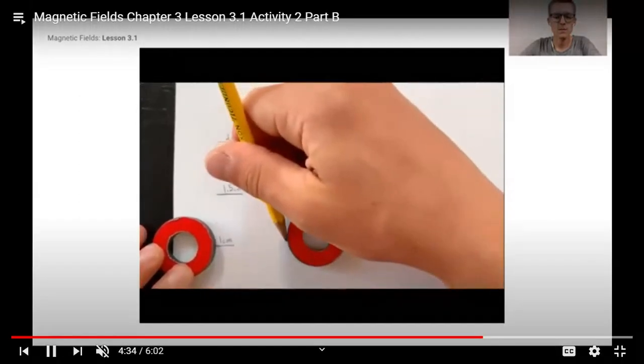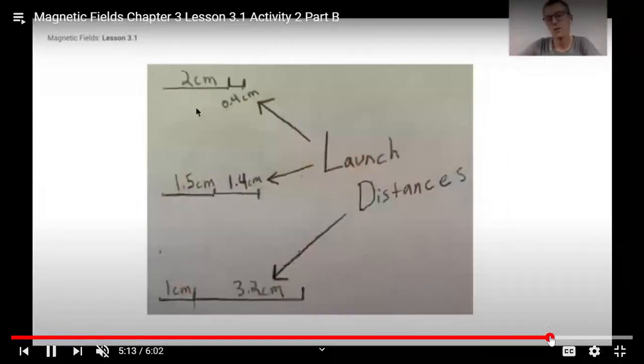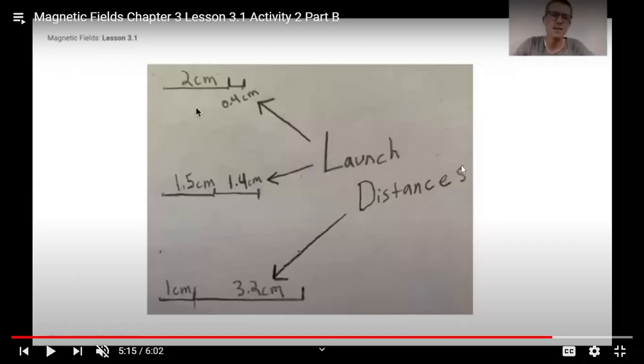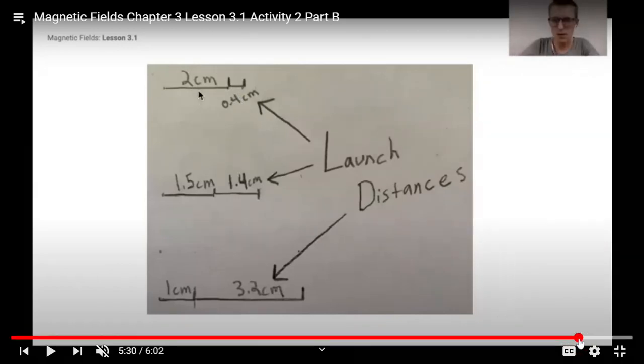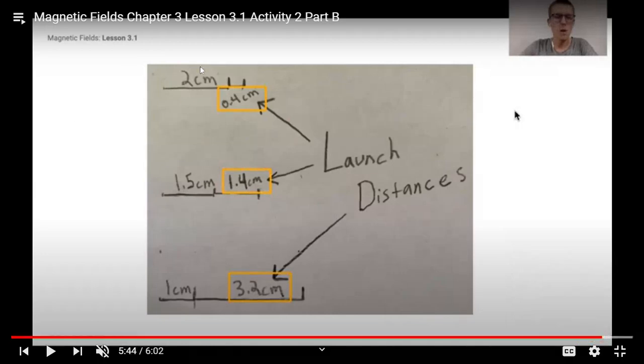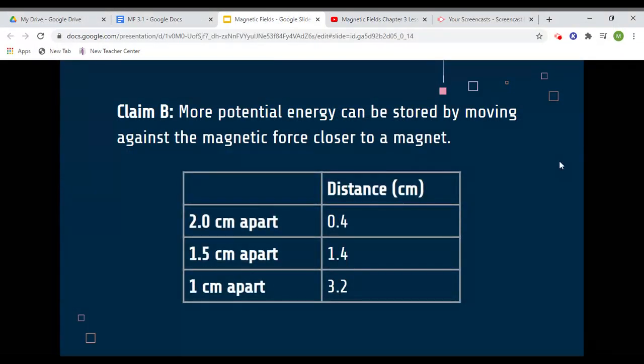You can rewind the video to watch it again and I'll bring up the data points now. So this is what our data is. If you remember, this is how far apart each magnet started, and then the second one here that's circled in yellow is how far it went. I'll show you what the data table will look like for that. You can pause the video and write this down.